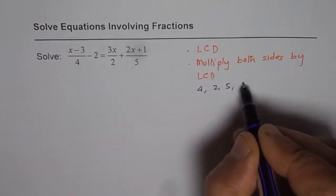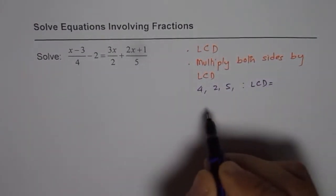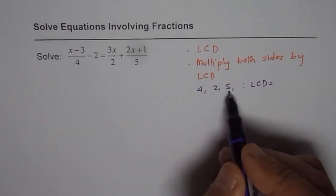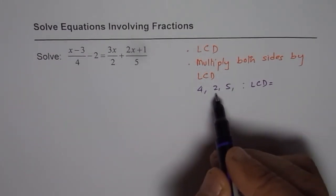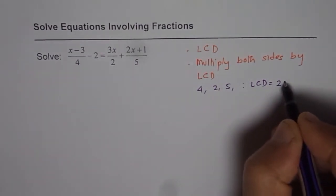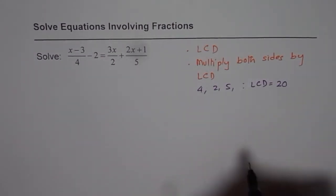So the lowest common denominator for these numbers is 4 times 5 is 20. 5 is a prime number so we do not have much option. So 20 is also a multiple of 2. So 20 becomes the lowest common denominator for us.